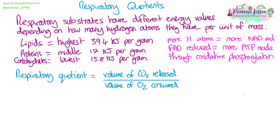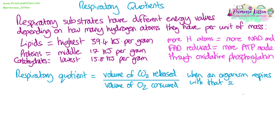We can calculate the respiratory quotient of a substrate using the formula: volume of carbon dioxide released divided by the volume of oxygen consumed. This can also be calculated using the molecules of carbon dioxide released and the number of molecules of oxygen consumed.